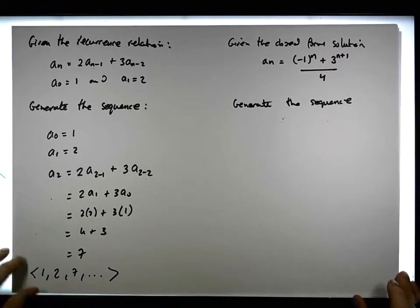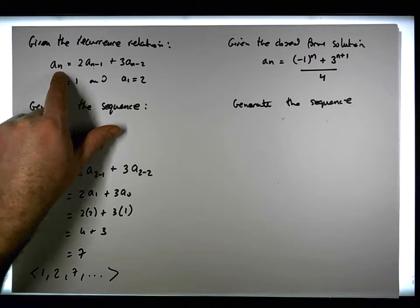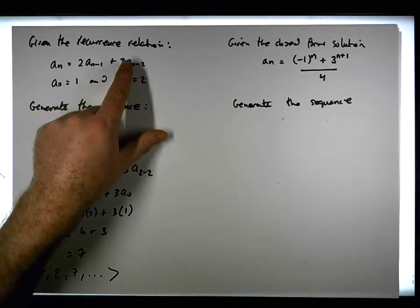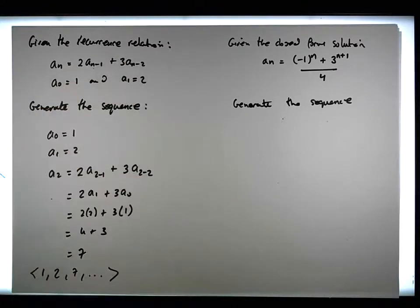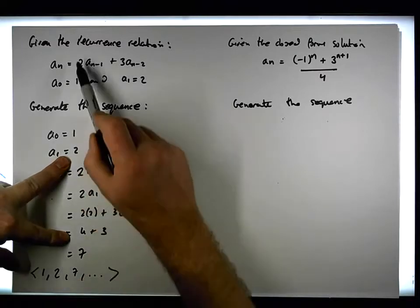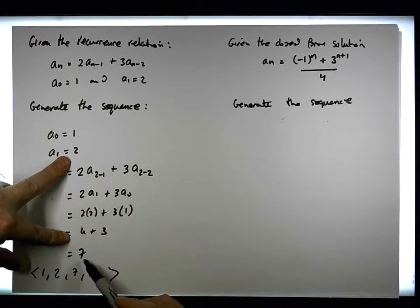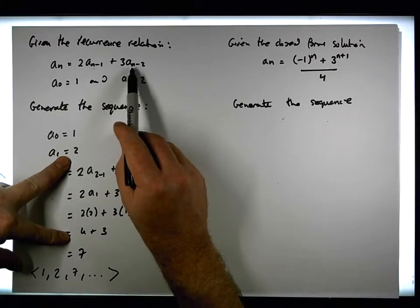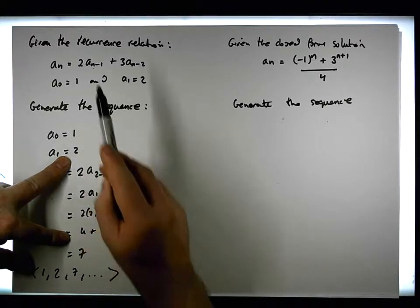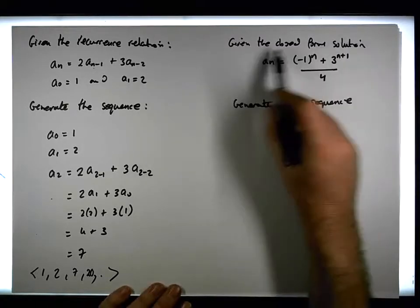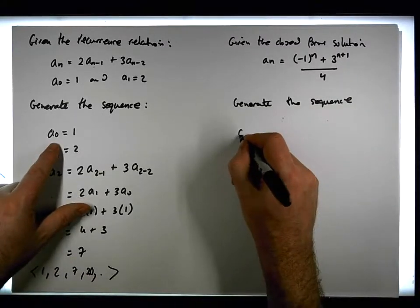We could generate more by calculating a₃. a₃ equals 2 times a₂ plus 3 times a₁. We know a₂ is 7 and a₁ is 2, so that's 2 times 7, which gives us 14, plus 3 times 2, which gives us 6. So 14 plus 6 gives us 20. Now let's take the closed form solution and see what we get.